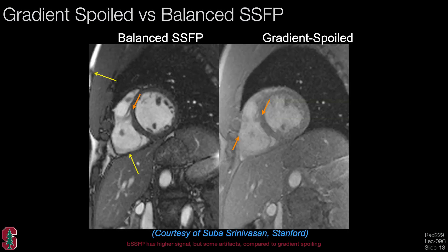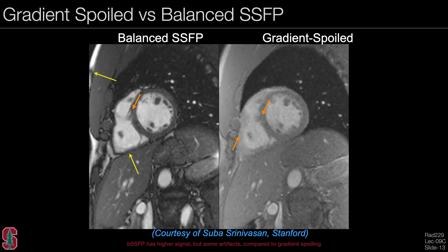Comparing balanced SSFP and gradient spoiling in a cardiac image: the balanced SSFP signal is on the left and the gradient spoiled signal on the right. The sequence is very fast, enabling dynamic imaging. Fluids are considerably brighter on balanced SSFP. Both contrasts are functions of T2 over T1. On the balanced SSFP sequence, the band artifact is visible at the top left, along with opposed phase effects between the heart and liver — neither of which appears in the gradient spoiled image.